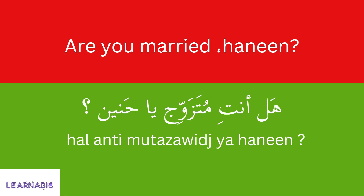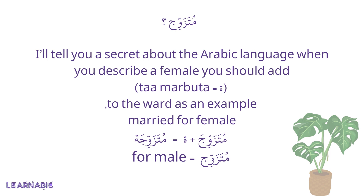Are you married, Hanin? هل أنت متزوج يا Hanin? I will tell you a secret about the Arabic language. If you want to describe a female, you should add تأنيث to the word. For example, married for female is متزوجة, not متزوج. متزوج is for male, متزوجة is for female.